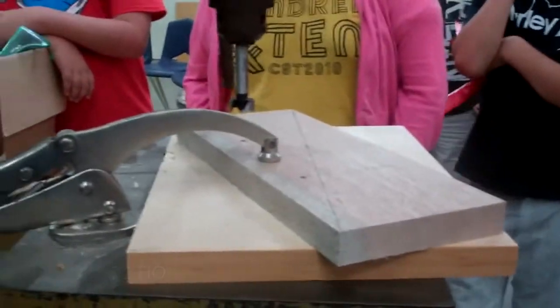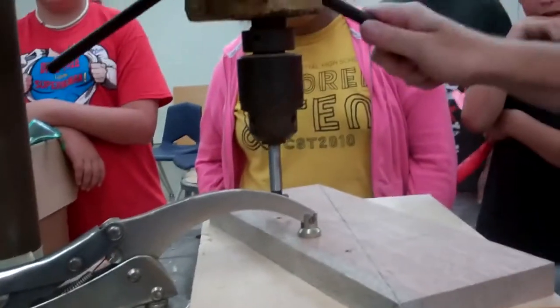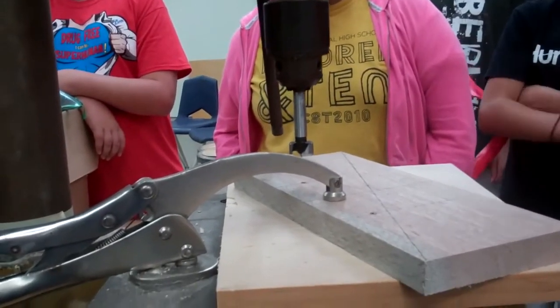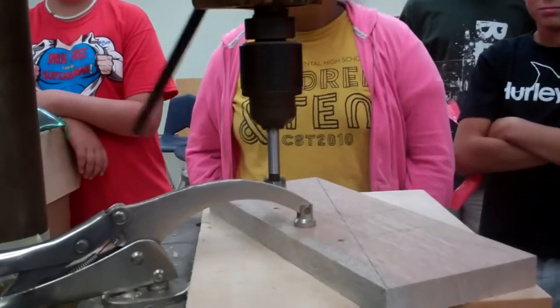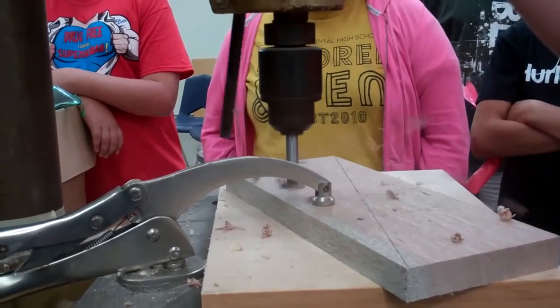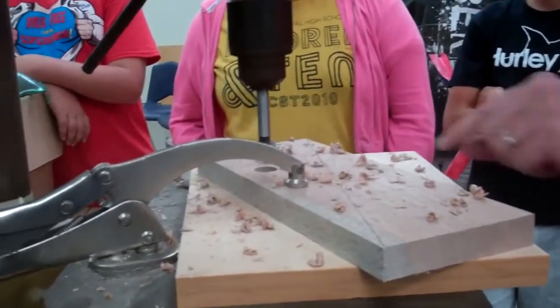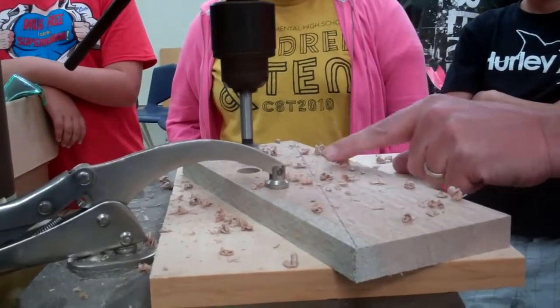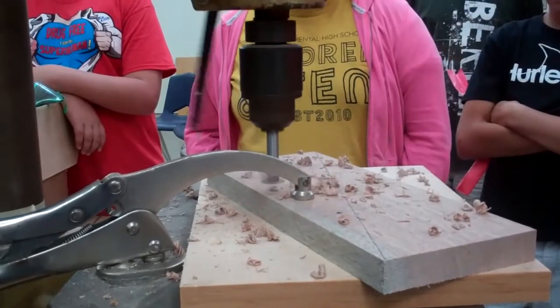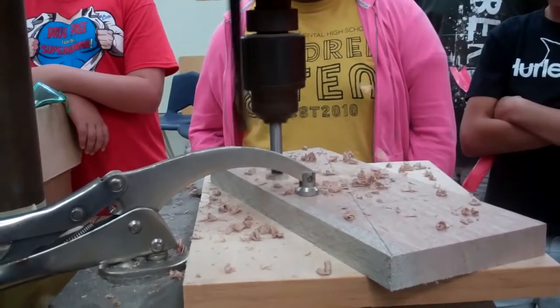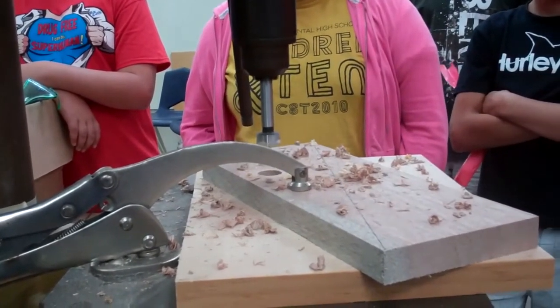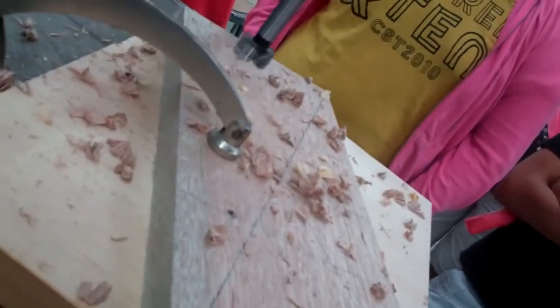When you drill, you don't want to go straight down. You're going to go down a little bit, up, so some of the sawdust comes out. You're going to go down a little bit, up. Down a little bit, up. Down a little bit, up. Until you see white pine come through this wood. As soon as you see white wood, you know you're all the way through. Don't touch anything until it comes to a complete stop.